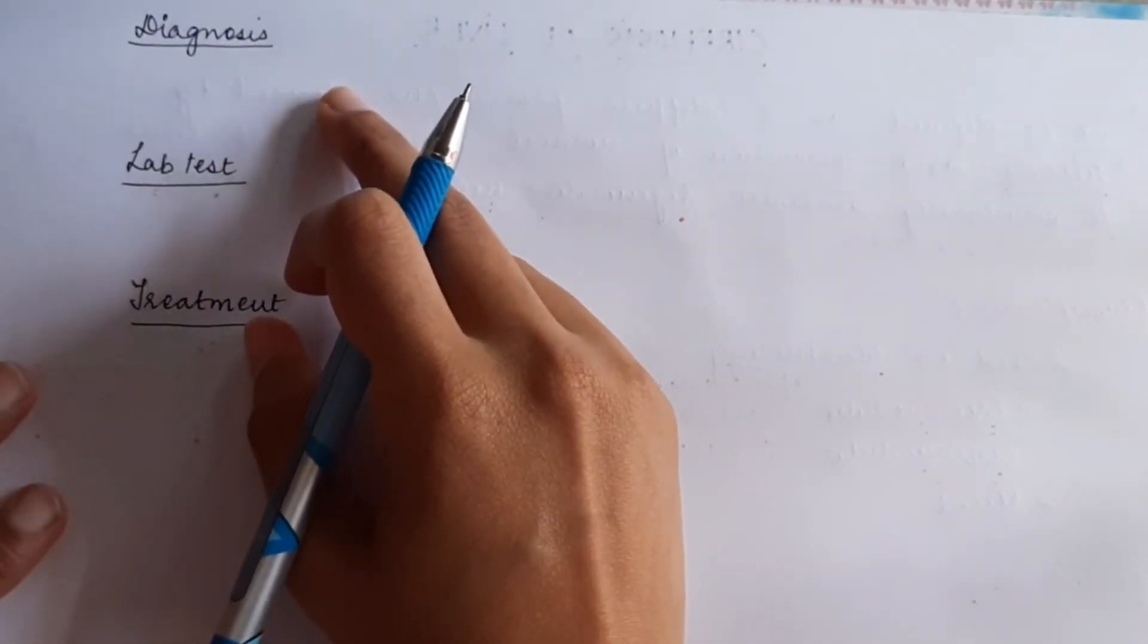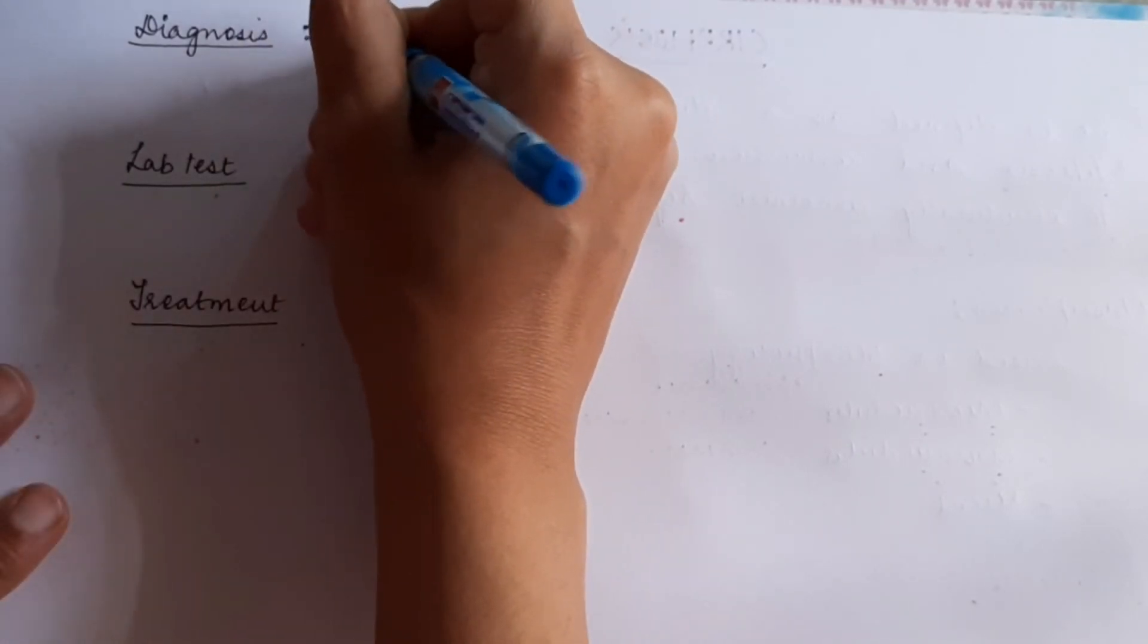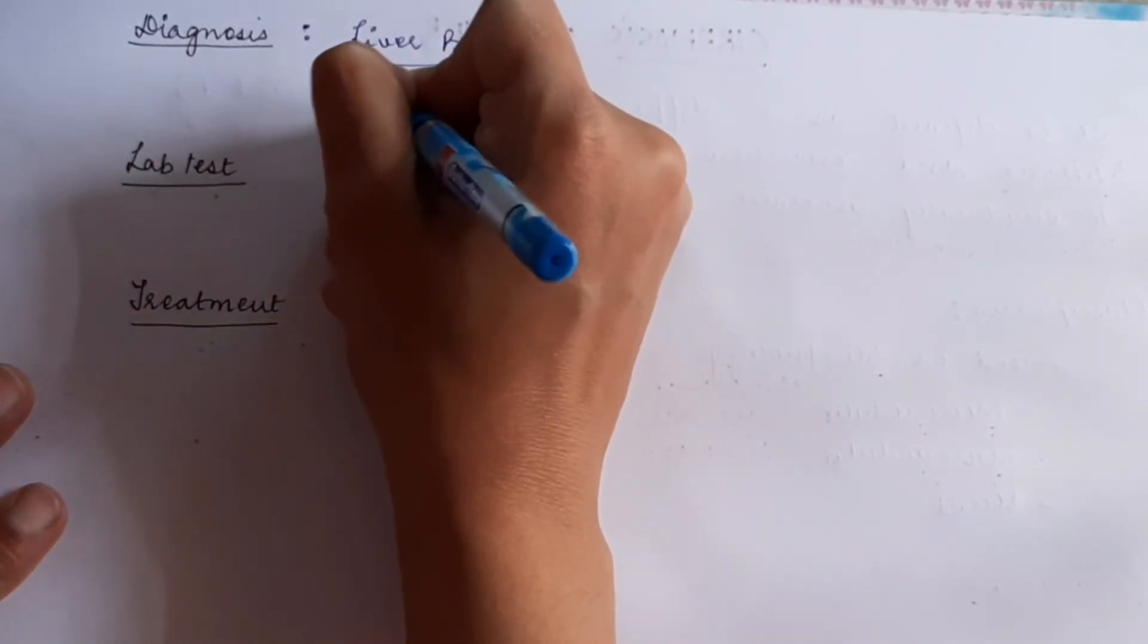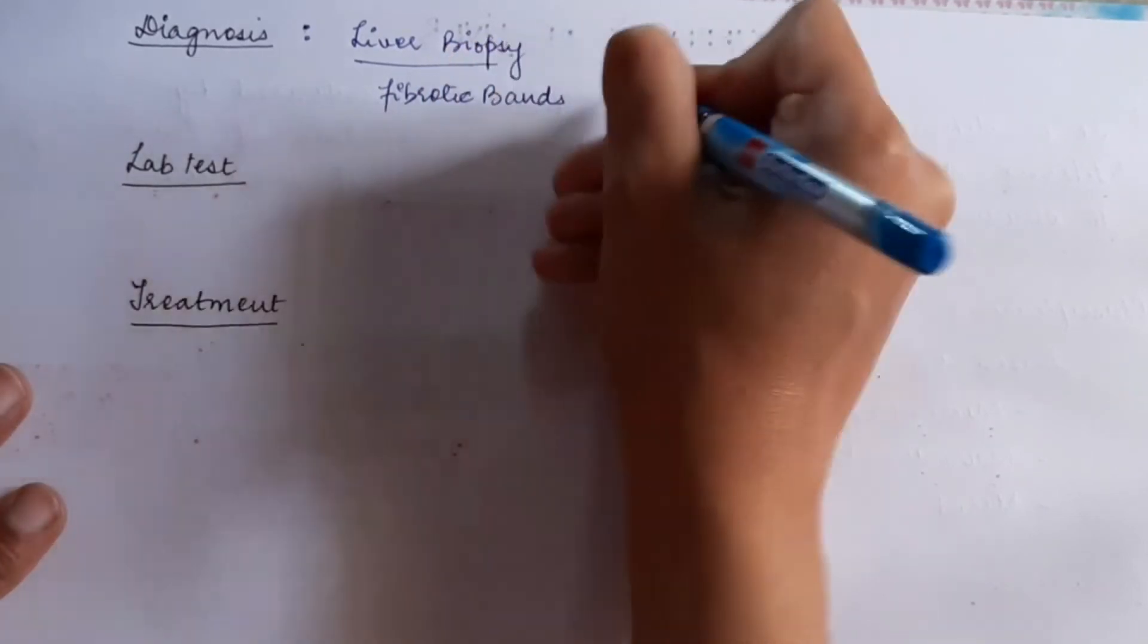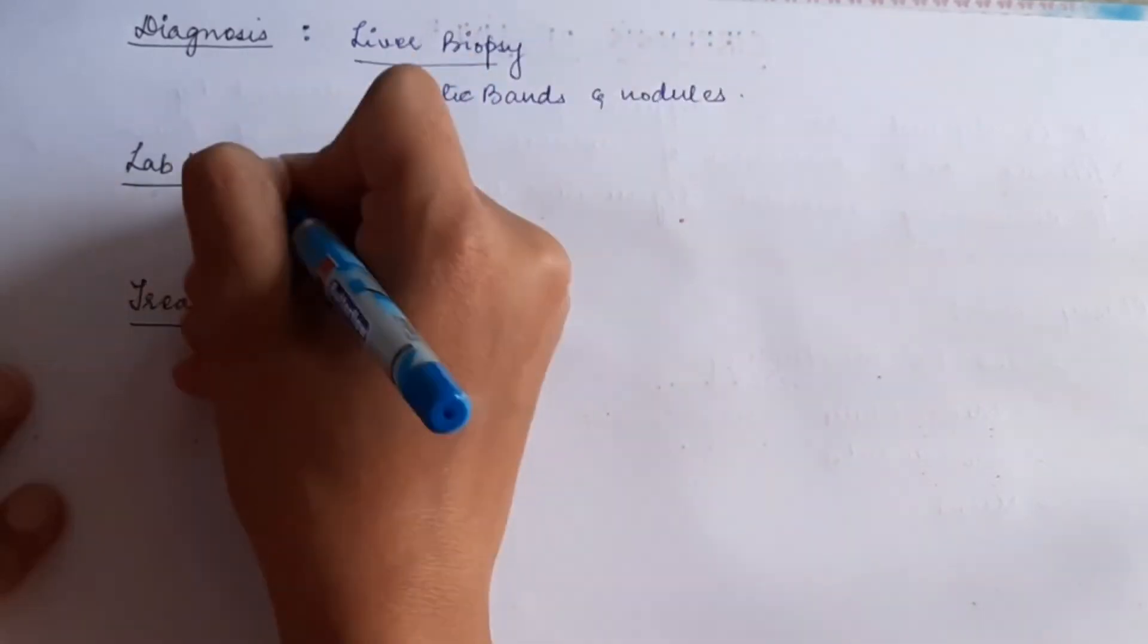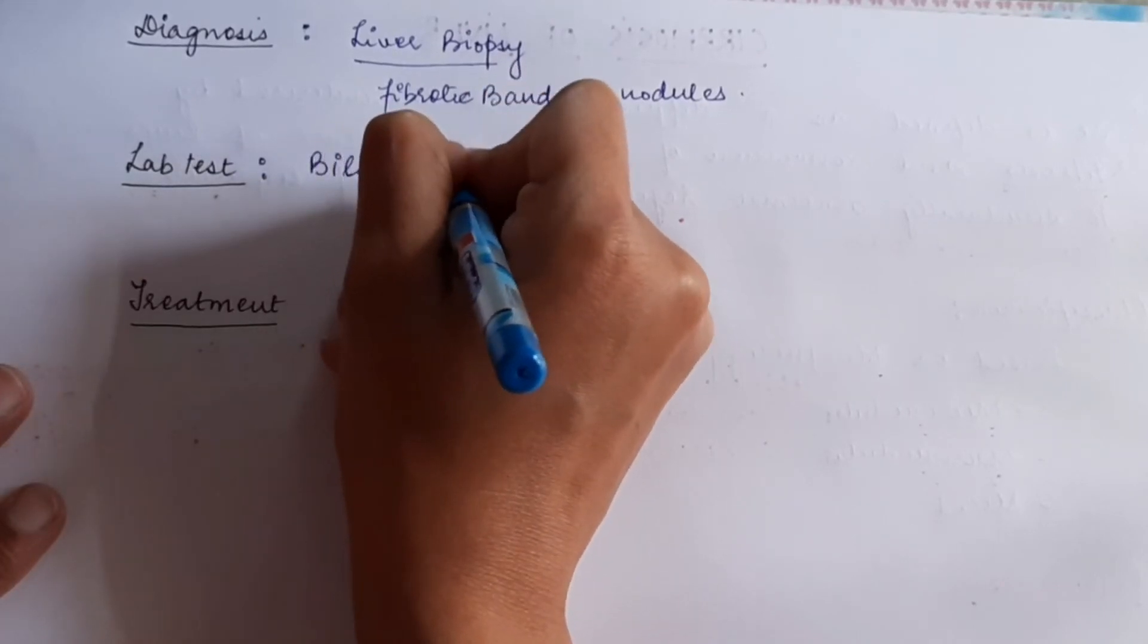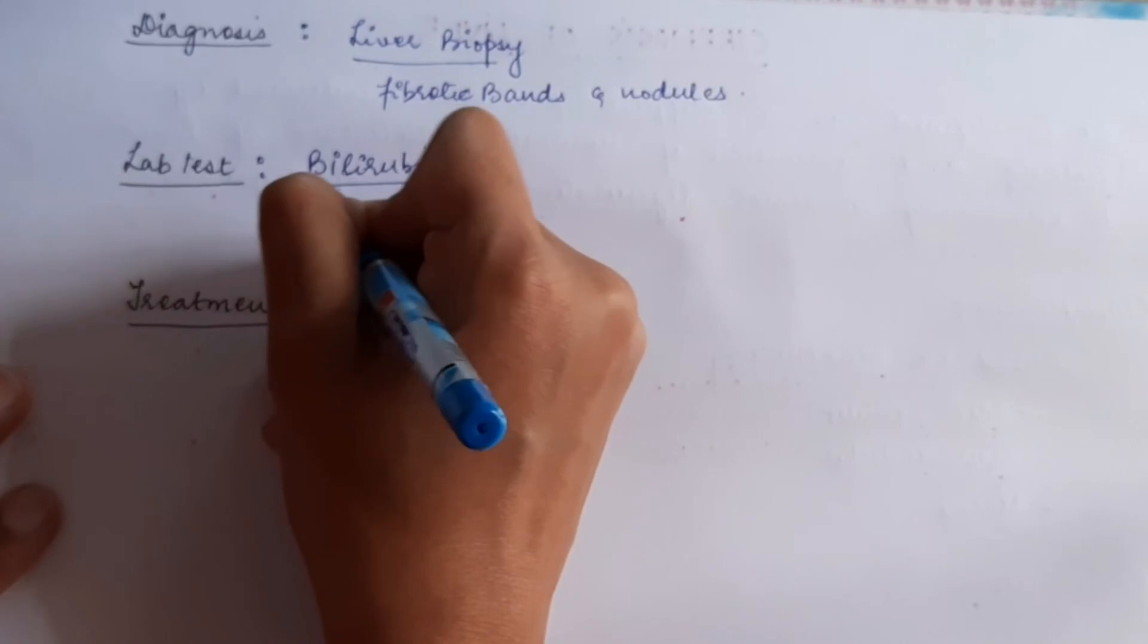The diagnosis of this condition can be done with the help of liver biopsy to study for the fibrotic bands present and the regenerative nodules. In lab test, we can look for increased amount of bilirubin in blood because conjugation is not possible. Bilirubin will increase, as will all the liver enzymes.